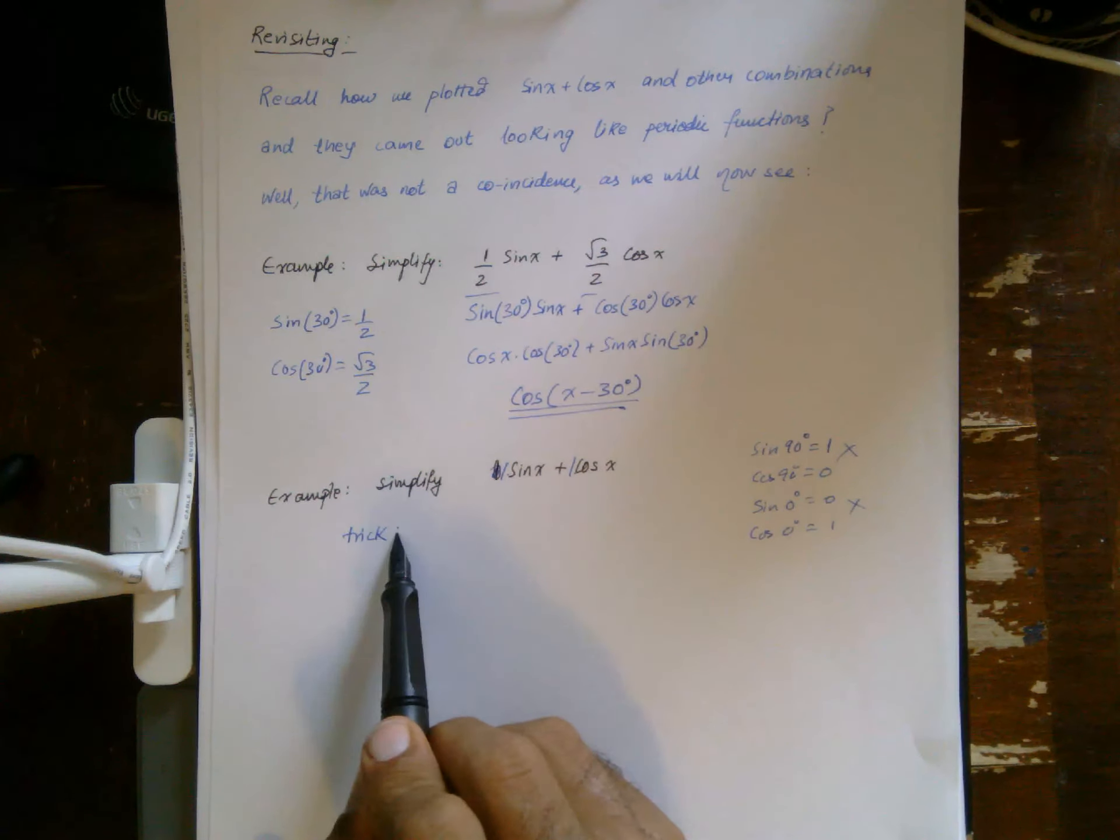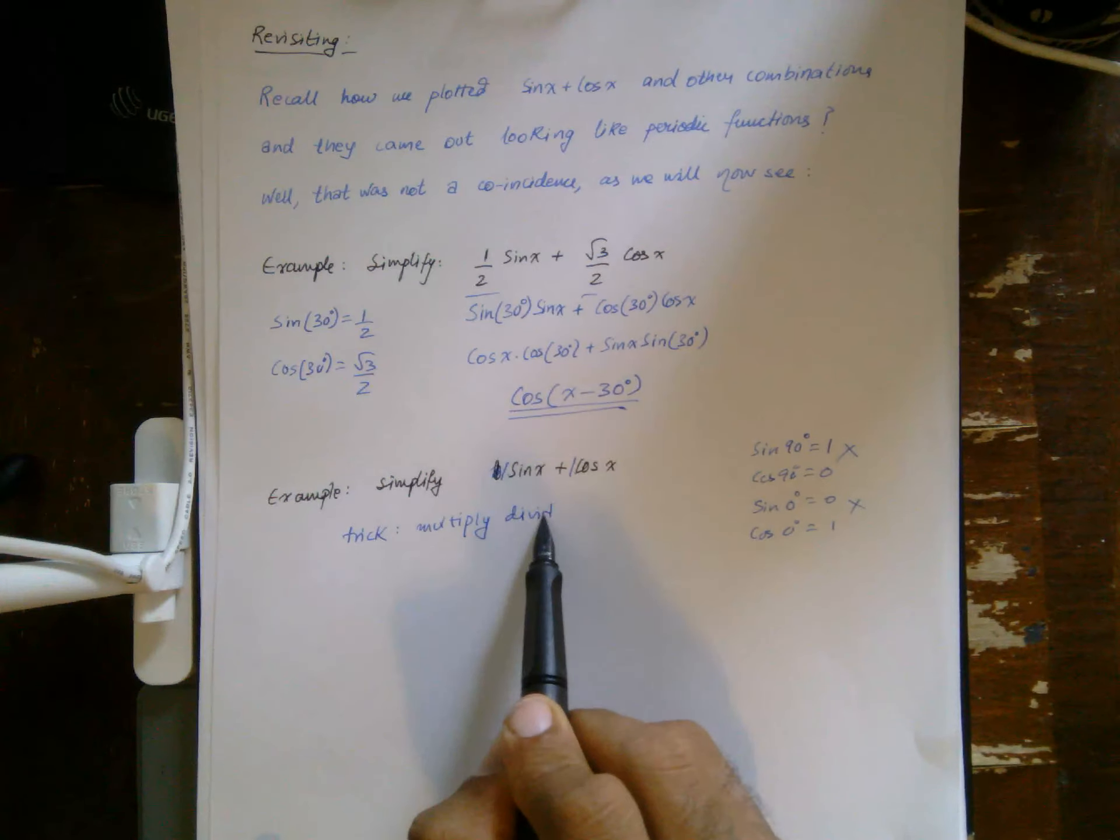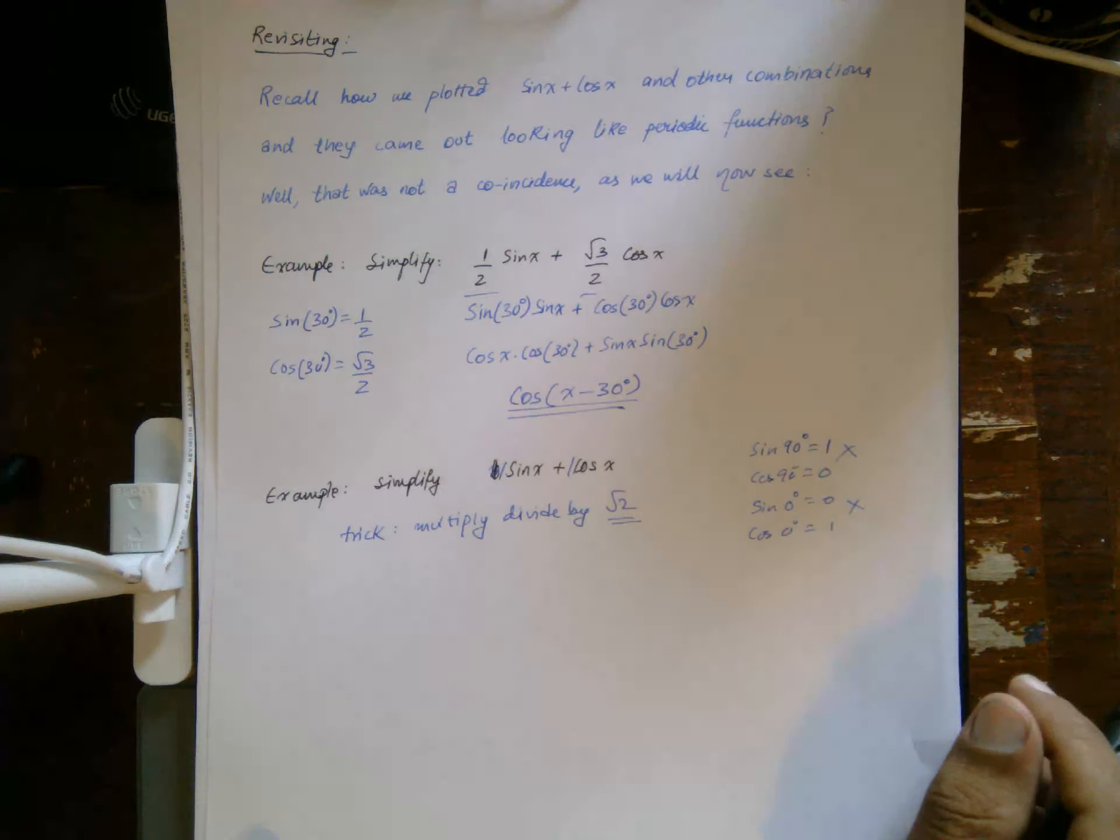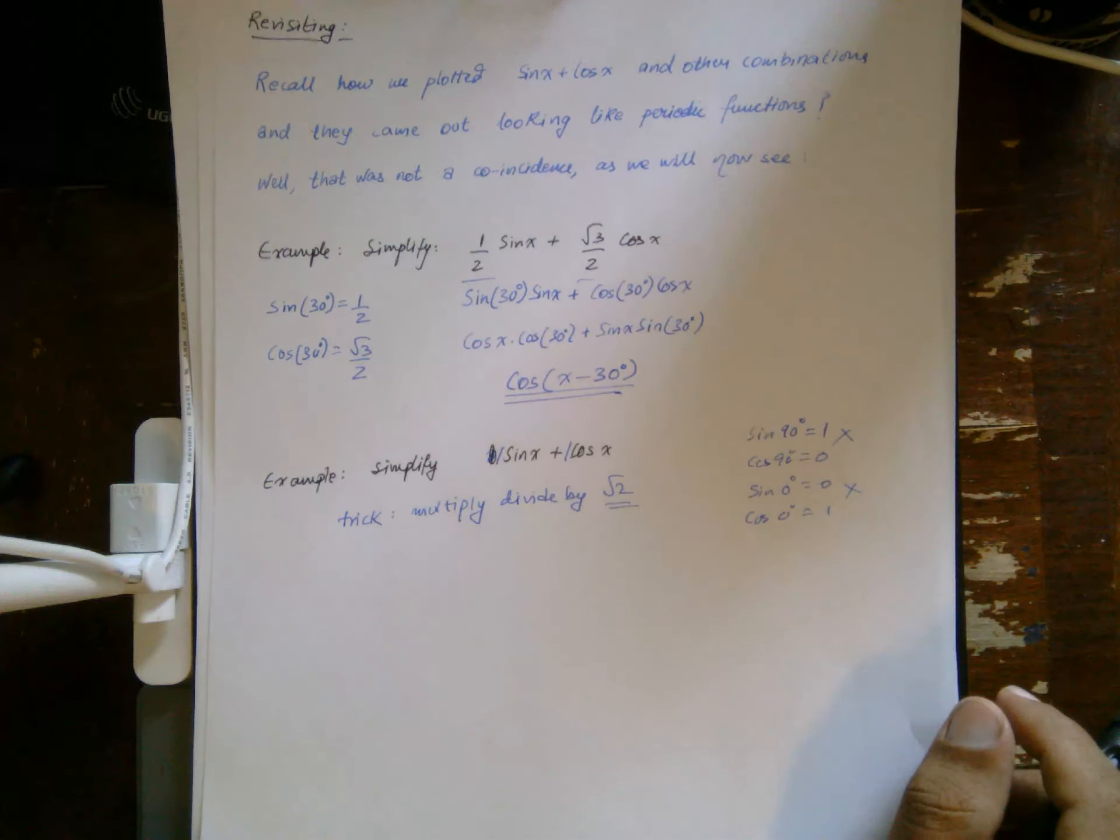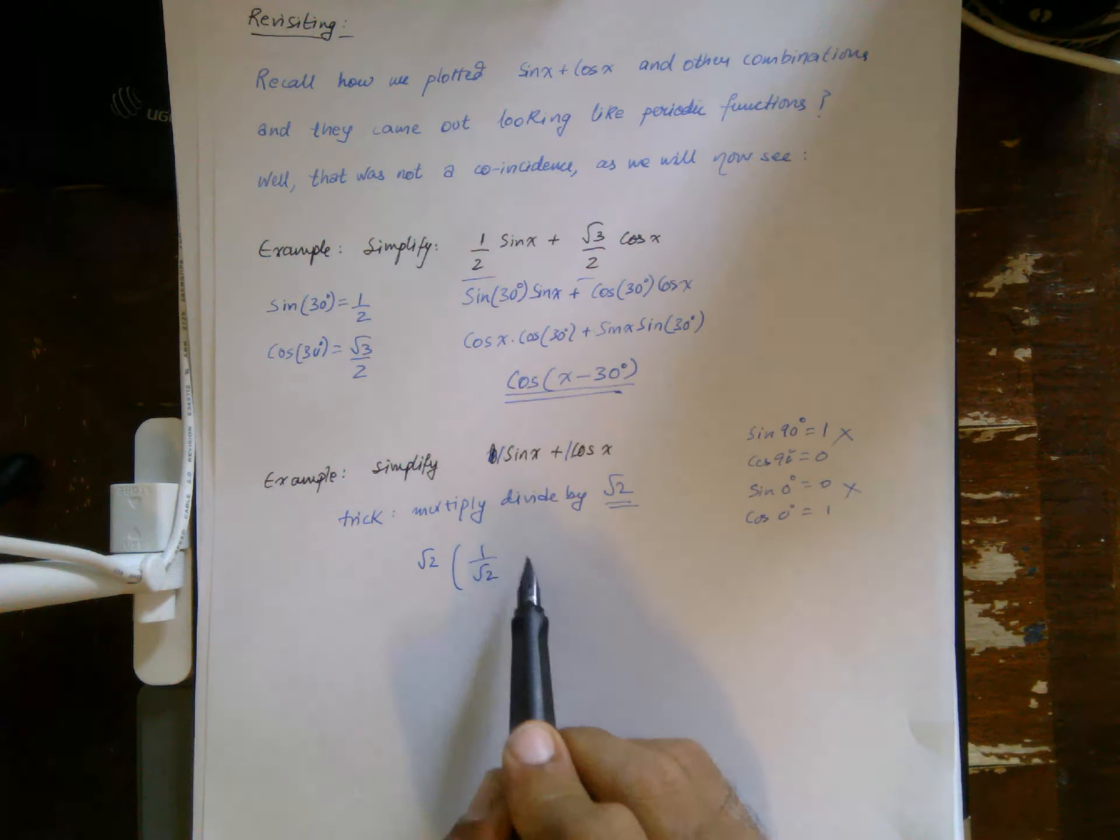Which means we need to find some other trick. Now here what I'm going to use, the trick is multiply divide by root 2. It's going to make more sense later when we do a general case why it's root 2, but for now let's just go ahead and multiply divide by root 2.